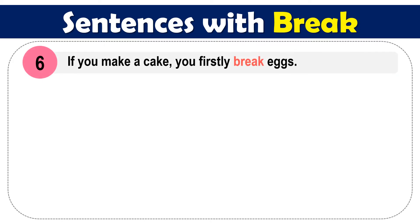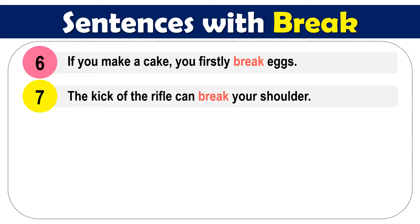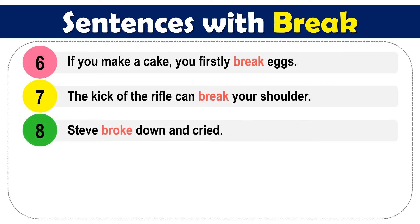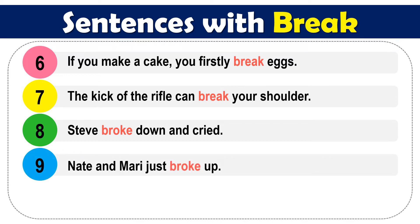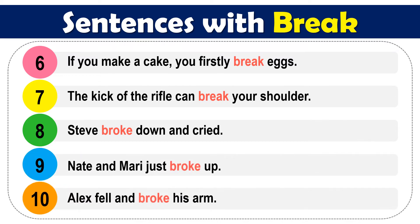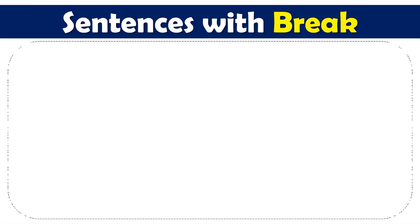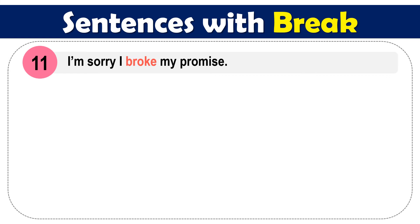If you make a cake, you firstly break eggs. The kick of the rifle can break your shoulder. Steve broke down and cried. Nate and Mari just broke up. Alex fell and broke his arm.